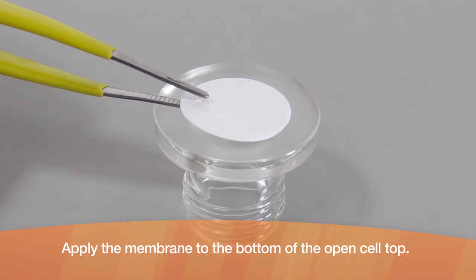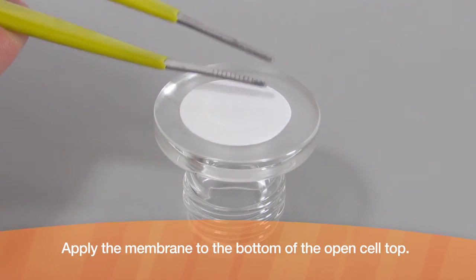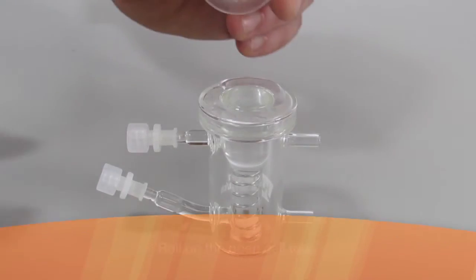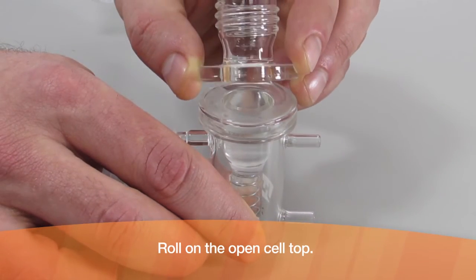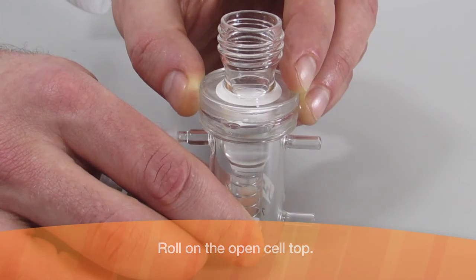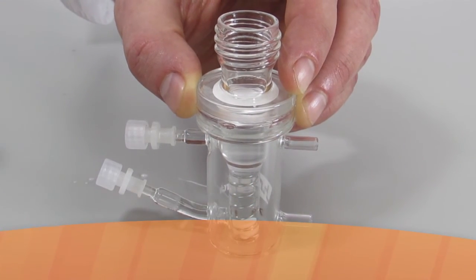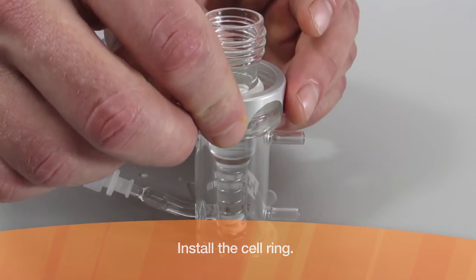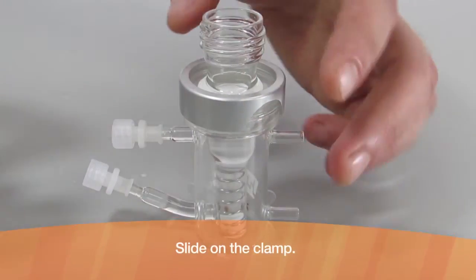Apply the membrane to the bottom of the open cell top. Roll on the open cell top, install the cell ring, and slide on the clamp.